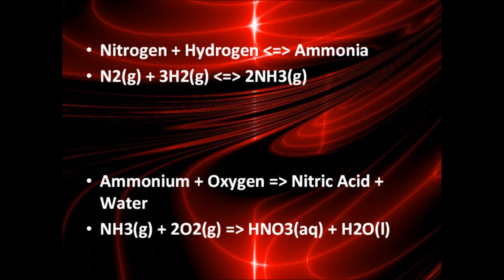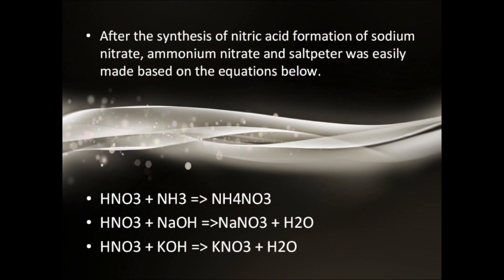This is called the Haber process, which is given by the following equation. Nitrogen and hydrogen would create ammonia. From ammonia, nitric acid is formed according to the equation below in a process called the Ostwald process, where ammonium plus oxygen would create nitric acid and water. After the synthesis of nitric acid formation of sodium nitrate, ammonium nitrate and saltpeter was easily made based on the equation below. The Haber process and the Ostwald process revolutionized the explosives industry.